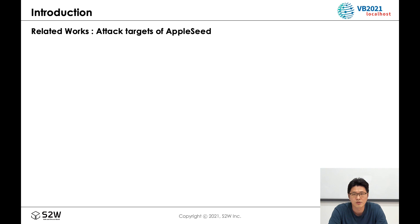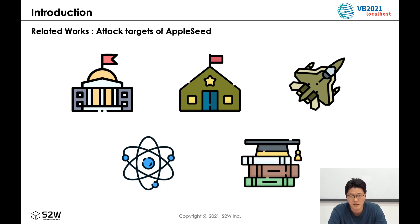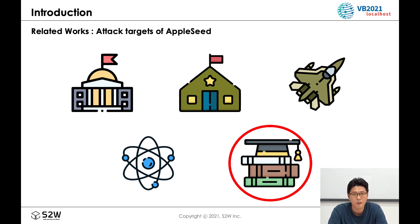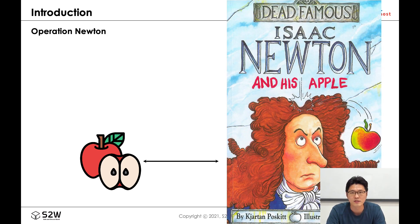According to several conference talks and analysis reports, Kimsuky has attacked various industries: government, especially foreign governments, ministries, and diplomatic missions; national security, especially defense and North Korea-related affairs; aerospace and defense; international relations and sanctions; nuclear-related policy; and academia and research, especially in the nuclear space. Today we are talking about the operation targeting the academia and research sector. During investigating Operation Newton, we also found a new factor, so we call this incident Operation Newton.